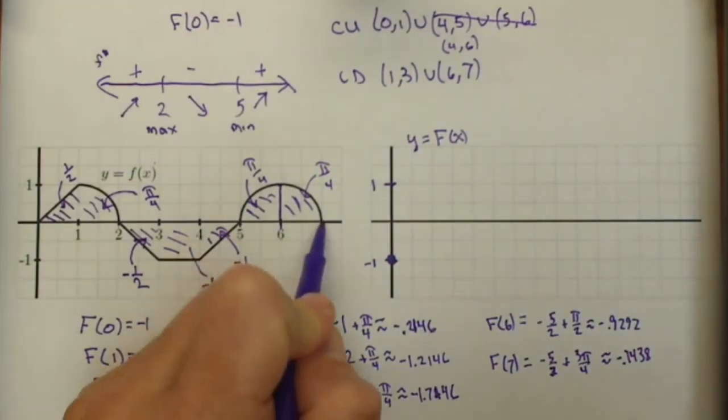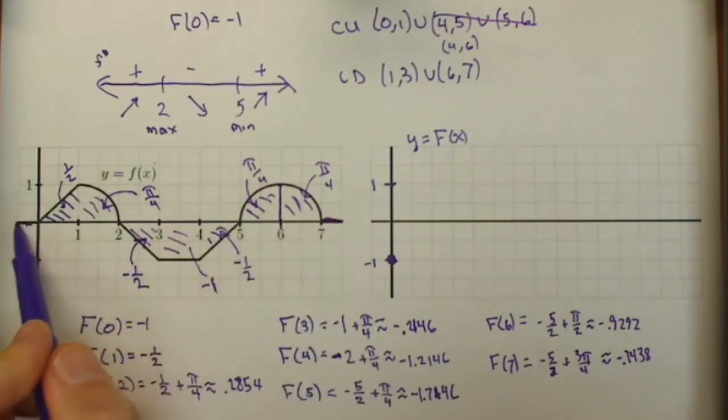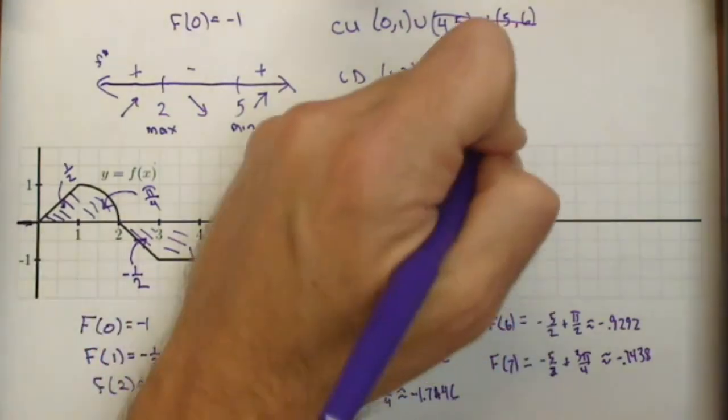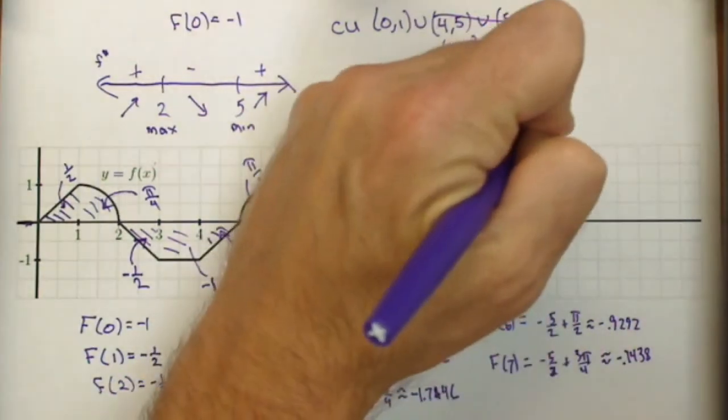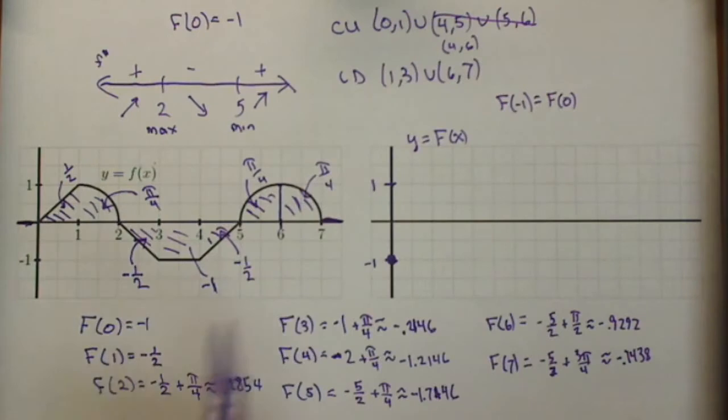Now one of the things that's happening in the graph, here the derivative is 0 and here the derivative is 0. So there's no change. So if we wanted to, f of negative 1 is going to be the same as f of 0. So it's negative 1.